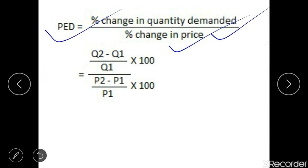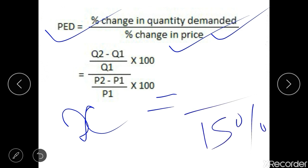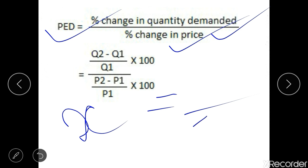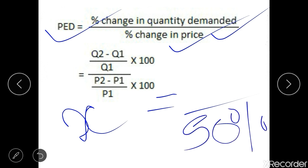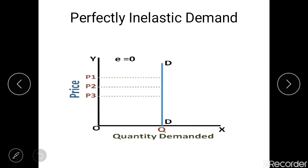Let's say you are a shopkeeper selling commodity X and you want to see whether a price change causes any change in demand. You change the price by 15%, but the change in quantity demanded was zero. You again increase the price by 50%, and again the change in quantity demanded was zero. In this case, you get the coefficient of price elasticity as zero.